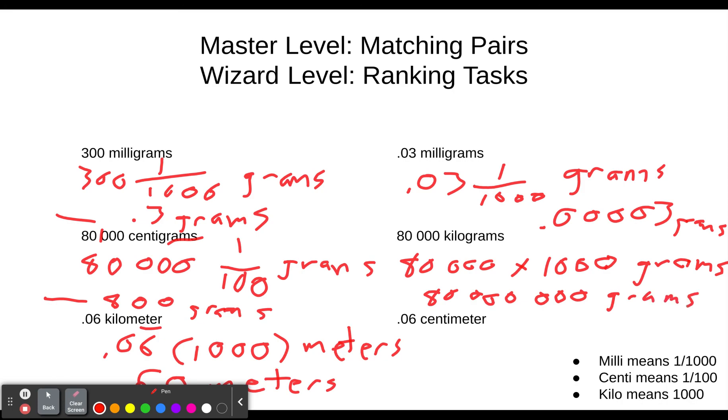And finally, we have 0.06 centi. Centi means 1 over 100 meters. And so dividing by 100 means we're going to move the decimal point twice to the left, because there are two zeros in 100. So we have 0.0006 meters.